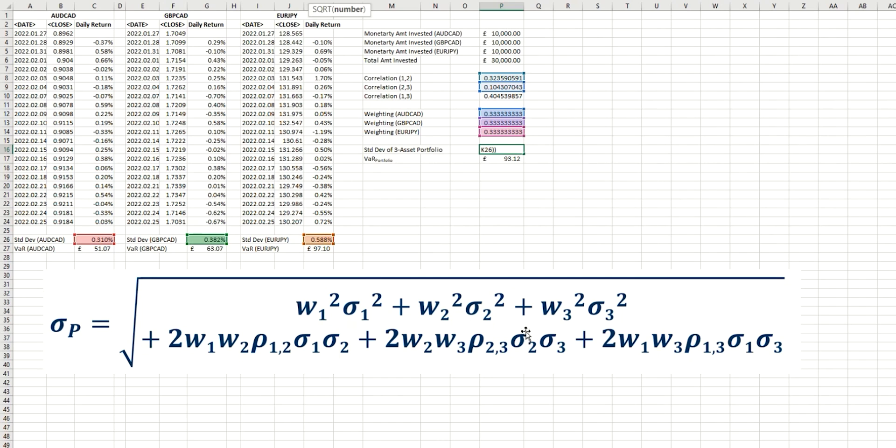So the last one is 2 times weight 1 times weight 3, which is this multiplied by this. Multiplied by the correlation coefficient between positions 1 and 3, which is this one. Multiplied by the standard deviation of position 1, and the standard deviation of position 3. Close the bracket, and that should be our calculation complete.